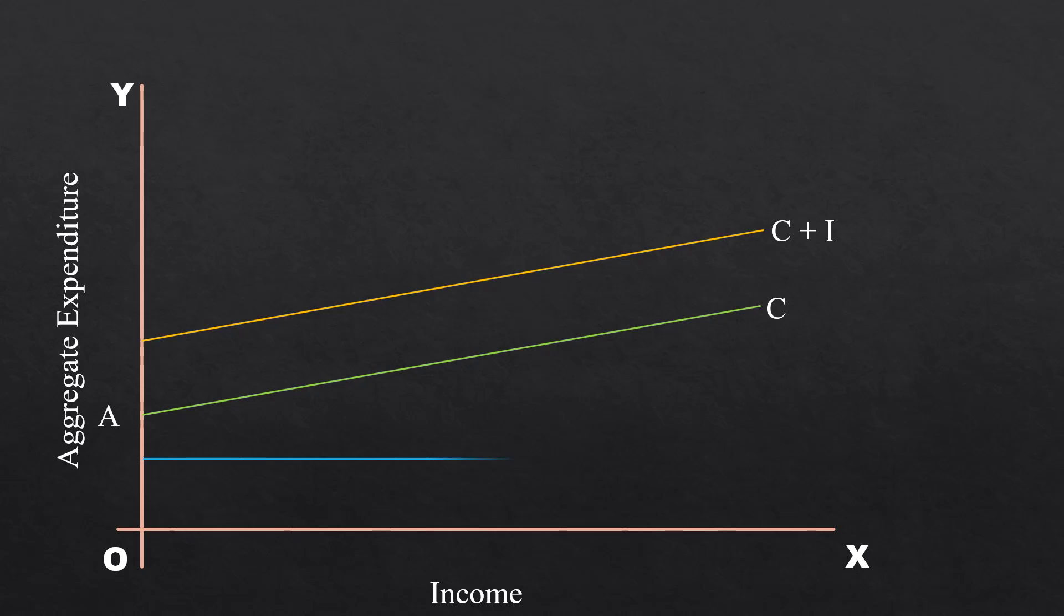Government expenditure. Curve G represents Government spending. Government spends on consumption as well as on investment. It spends on consumption goods like defense, maintenance of law and order, education, health care, etc.